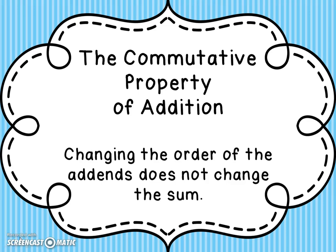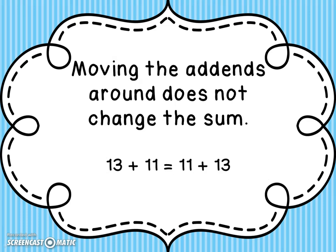The commutative property of addition says changing the order of the add-ins does not change the sum. You can put the add-ins in any order and still get the same answer. For example, 13 plus 11 equals 24, and 11 plus 13 also equals 24. Moving the add-ins around does not change the sum.